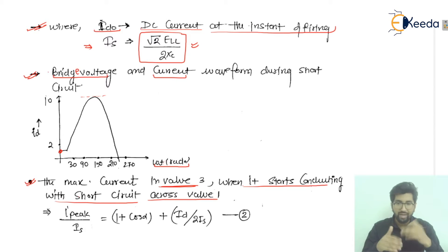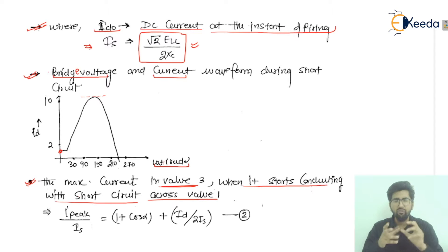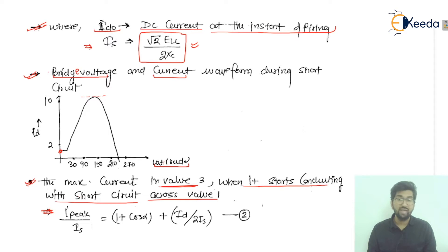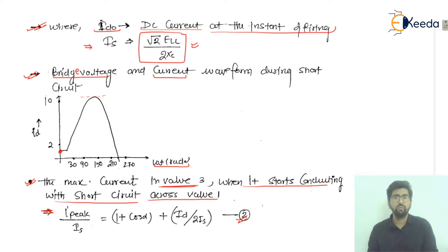At the time of that commutation, if there is a short circuit current, the maximum current in valve three is: i_peak = is · (√2 · L / (2·Xc)) · (1 + cos α) + id / 2·is, where α is the firing angle. These are the key points to remember.